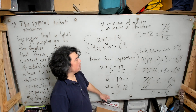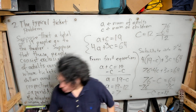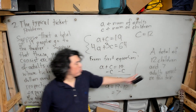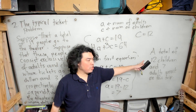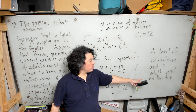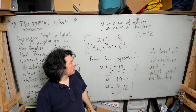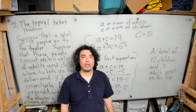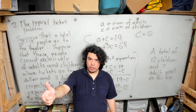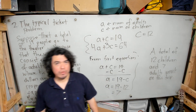So we can see the answer: a total of 12 children and 7 adults went to the theater. Now we're going to redo the solution using Gaussian elimination.